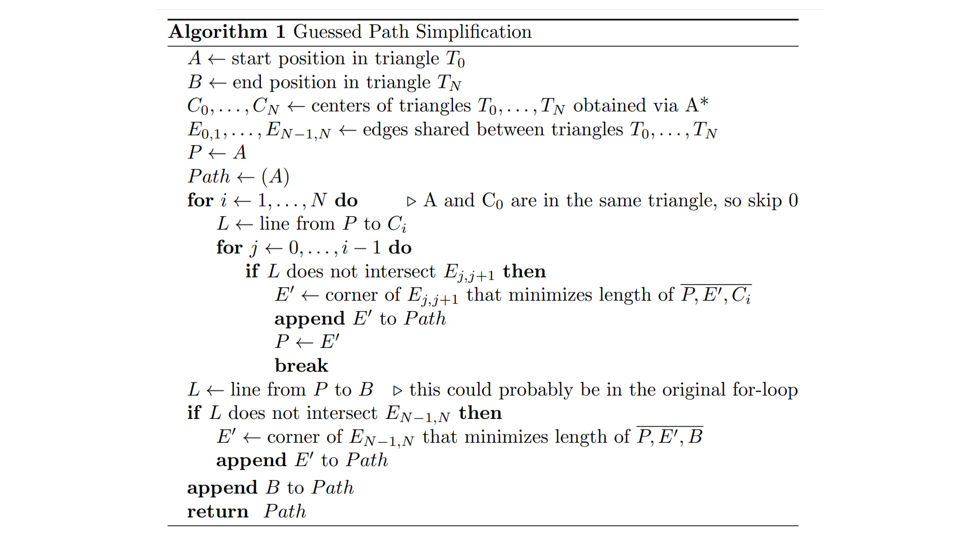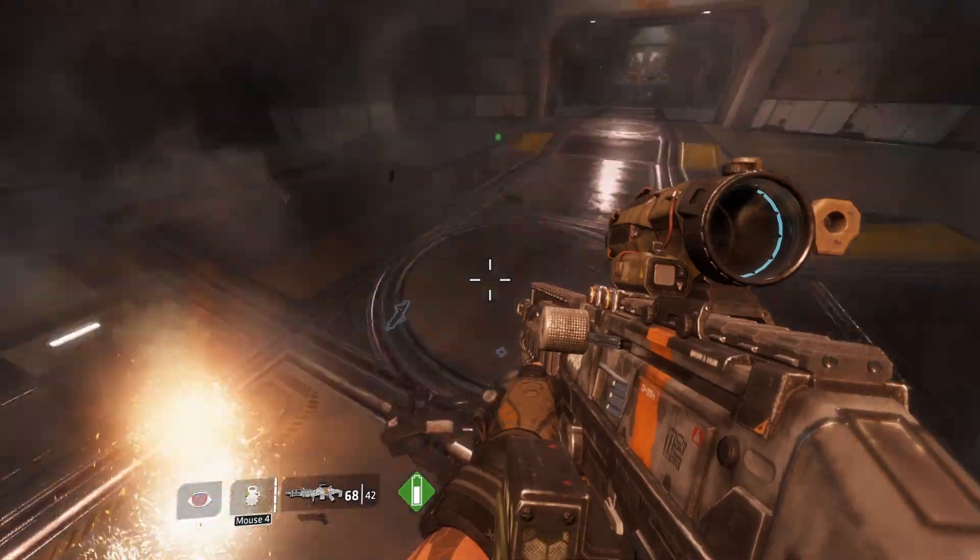If we look at the algorithm, I assume A is inside of triangle zero and B is inside of triangle n, if that wasn't clear. And also that the A* path through the center points of each triangle is given, along with all of the edges between the path triangles. But other than that, I hope it's good.